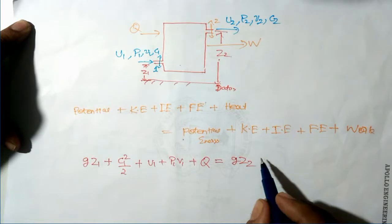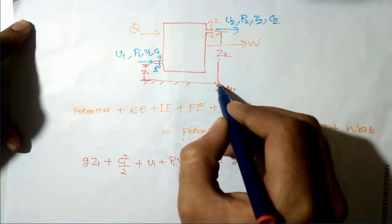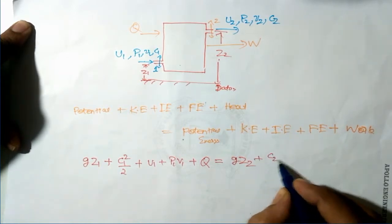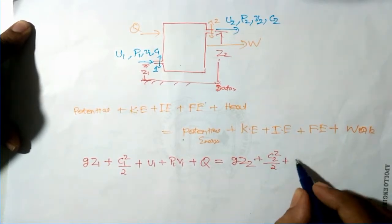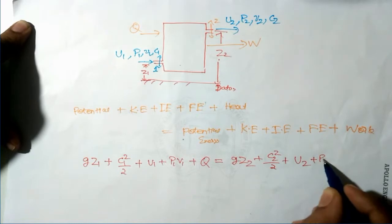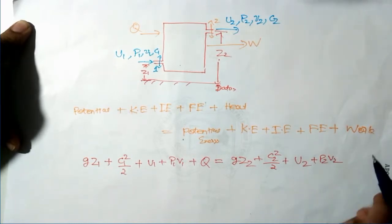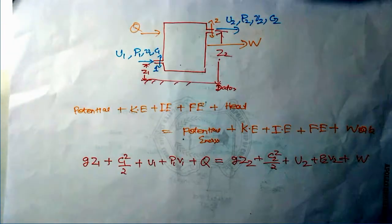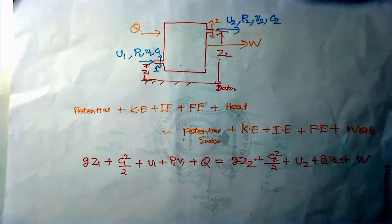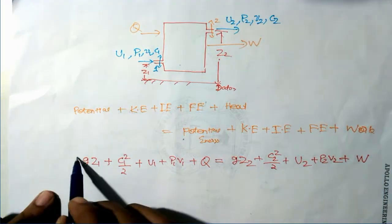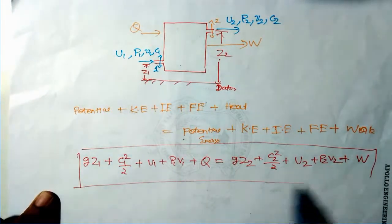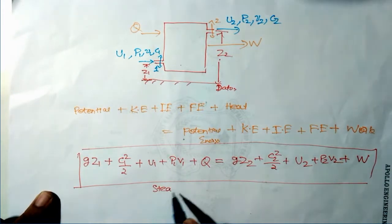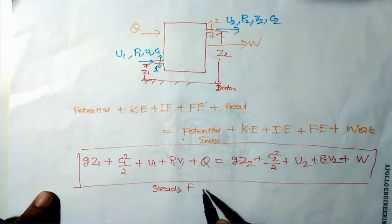At cross section 2, potential energy is g times Z2, kinetic energy is C2 squared divided by 2, internal energy is U2, and flow energy is P2 times V2. Plus work output W. This balanced energy equation is known as the steady flow energy equation.